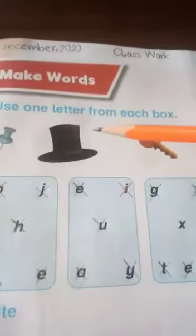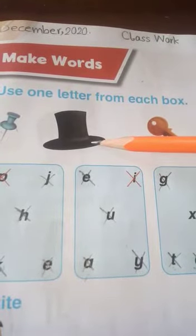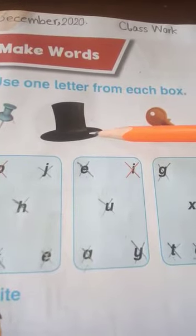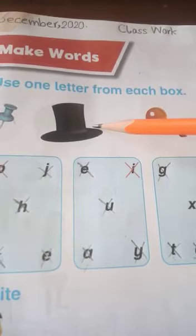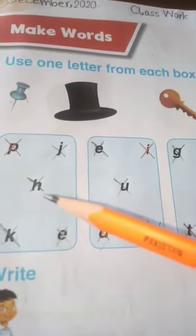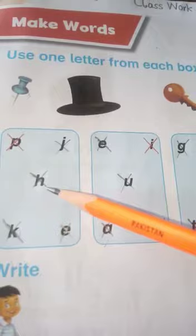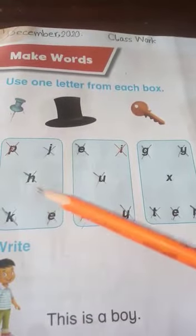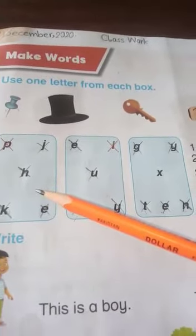The second picture is of a hat. Let's find out the spelling of 'hat' according to phonics and write it here. The first phonic sound is 'h' — cross out the 'h' from the box and write it here.